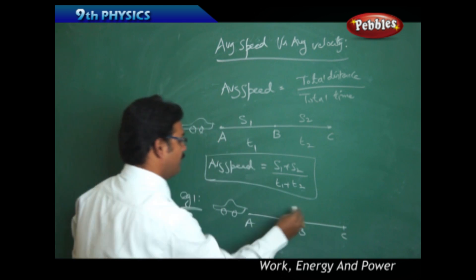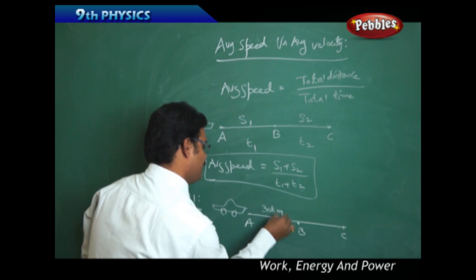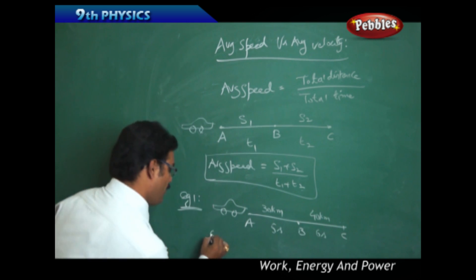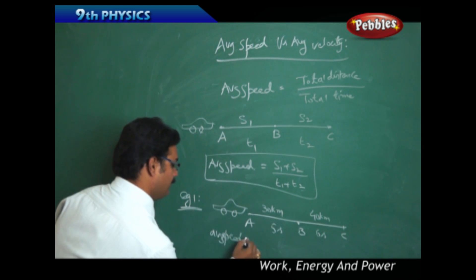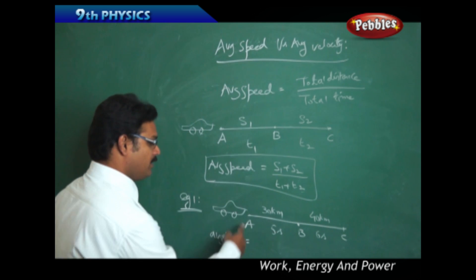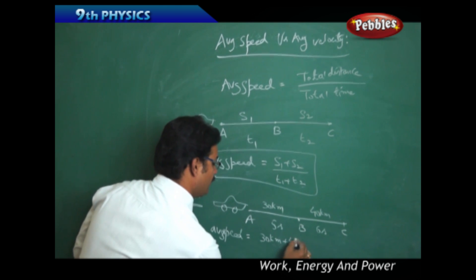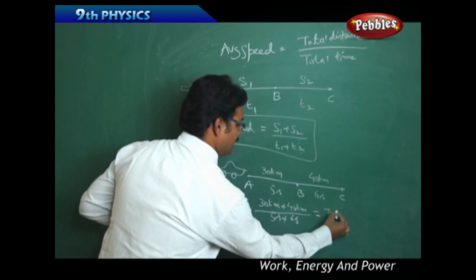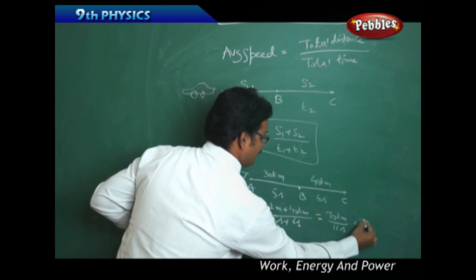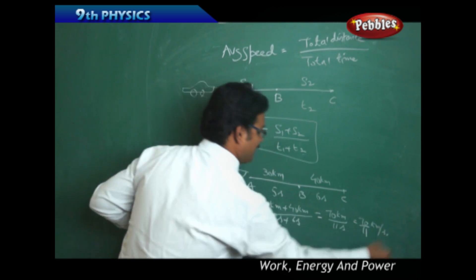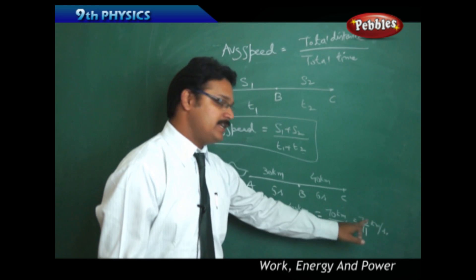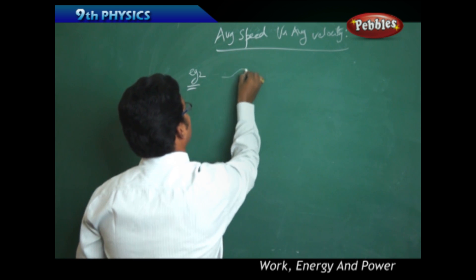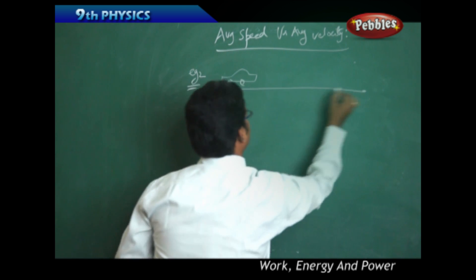Example: a car travels a distance of 30 kilometers in 5 seconds and 40 kilometers in 6 seconds. What is the average speed of the car? Average speed equals total distance divided by total time, so 30 km plus 40 km divided by 5 seconds plus 6 seconds, giving 70 kilometers by 11 seconds, or 70 by 11 kilometers per second. In meters per second, that is 70,000 by 11 meters per second.